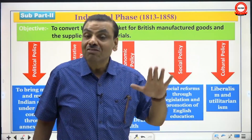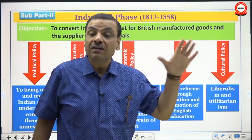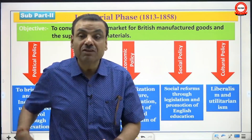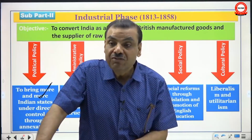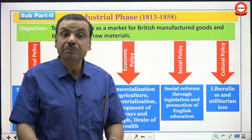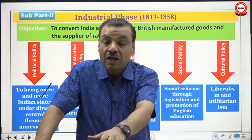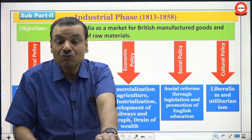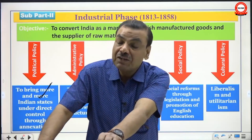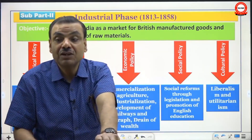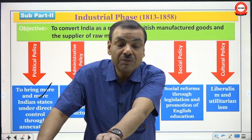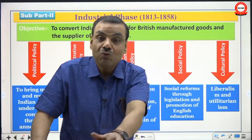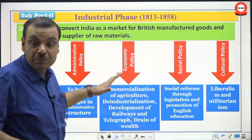In the previous phase, governor generals had tried to avoid war and annexation as much as possible, though they were still compelled to fight and annex territories to fulfill mercantile needs. But now, in the industrial phase, the company's role was undergoing a major change. The British Parliament, through the Court of Directors, expected the company to reduce its mercantile role and instead play a major administrative role — enabling British industrial capitalism in India.